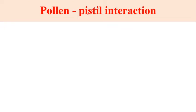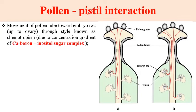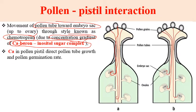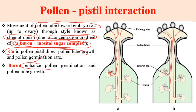The movement of the pollen tube towards the embryo sac up to the ovary through the style is known as chemotropism. There are chemical signals which help in movement of the pollen tube towards the egg. This chemotropism is due to the concentration gradient of calcium, boron, inositol, and sugar complex. Calcium directs pollen tube growth and pollen germination rate. Boron enhances pollen germination and pollen tube growth.